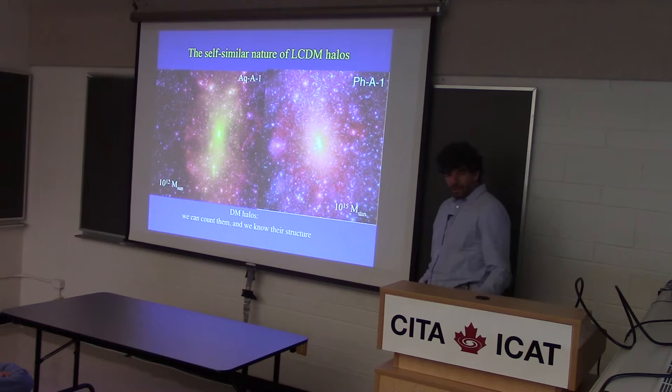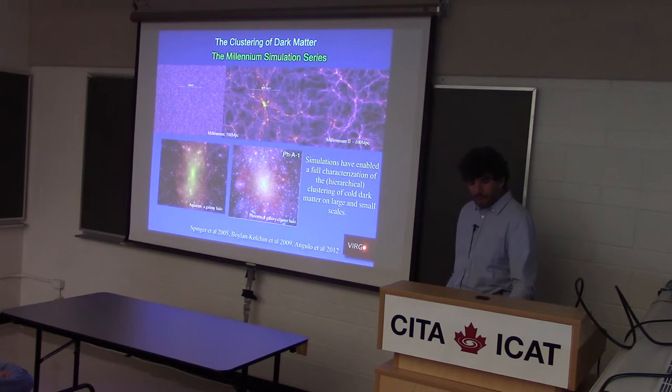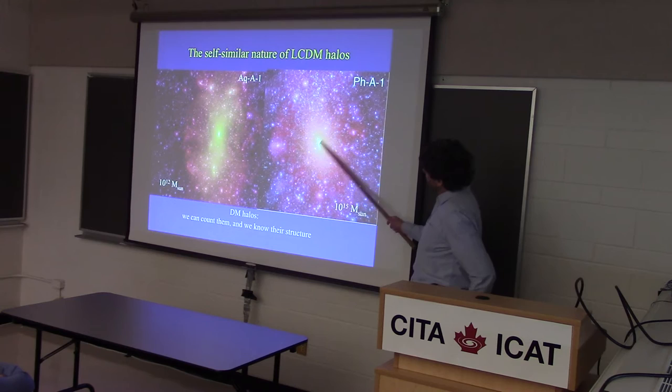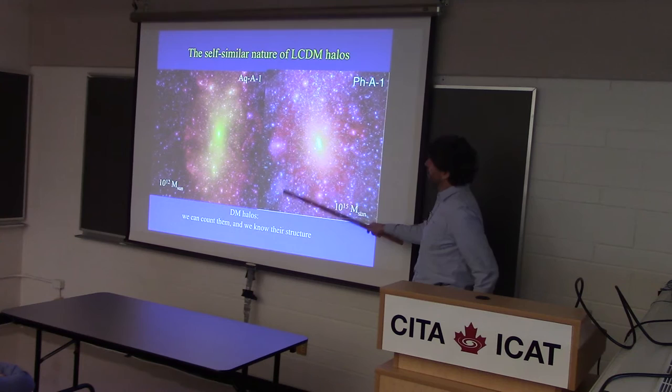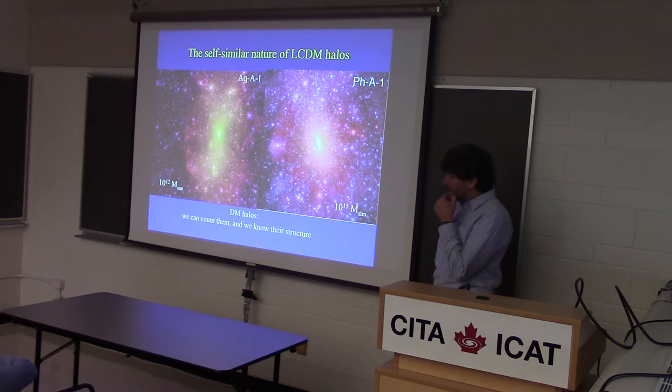Dark matter halos are the building blocks of the hierarchy of structures in cold dark matter — this cosmic web-looking thing. Basically, those are the sites of nonlinear collapse of dark matter, regions where the crossing time is shorter than the age of the universe. There is no edge to a dark matter halo, but the size we talk about is where the orbit takes about a Hubble time to go around — what we call the virial radius.